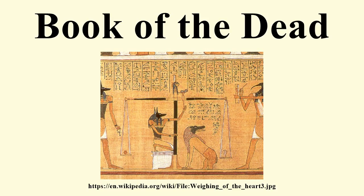At this point, there was a risk that the deceased's heart would bear witness, owning up to sins committed in life; Spell 30B guarded against this eventuality. If the scales balanced, this meant the deceased had led a good life. Anubis would take them to Osiris and they would find their place in the afterlife, becoming Maa-Kheru, meaning 'vindicated' or 'true of voice.' If the heart was out of balance with Maat, then another fearsome beast called Ammit, the devourer, stood ready to eat it and put the dead person's afterlife to an early and unpleasant end. This scene is remarkable not only for its vividness, but as one of the few parts of the Book of the Dead with any explicit moral content.